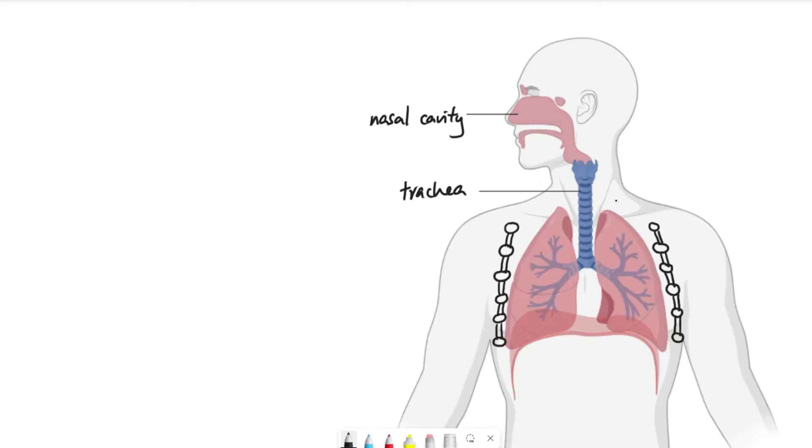So the trachea, you can actually feel the trachea if you put your fingers up to your throat and you should be able to feel the ridges of the trachea. So the ridges are actually the C-shaped cartilage that holds your trachea up. So it prevents it from collapsing. So the air goes down the trachea and it branches into two parts here and here.